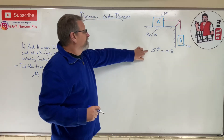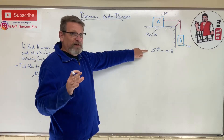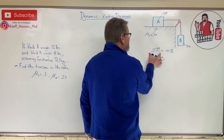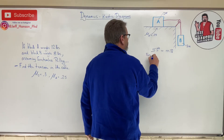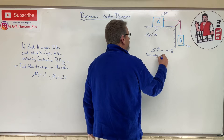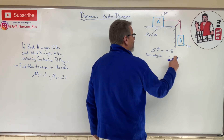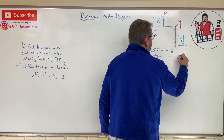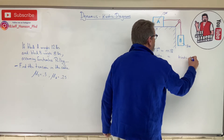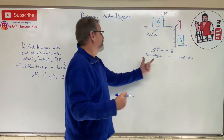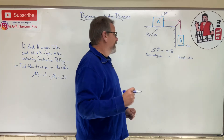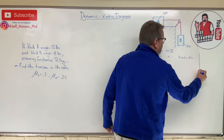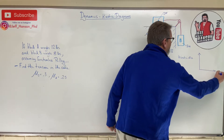From Newton's second law, we can split the equation into two sides. On the left side we have what I'll call the force body diagram — all the forces acting. On the right side we have motion — I'll call this the kinetic diagram. We do a force body diagram and a kinetic diagram for each block. Our axes are i-hat (x) and j-hat (y).